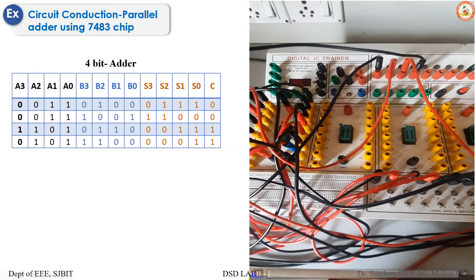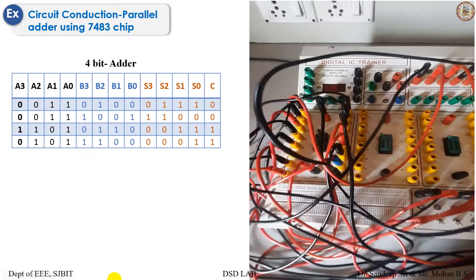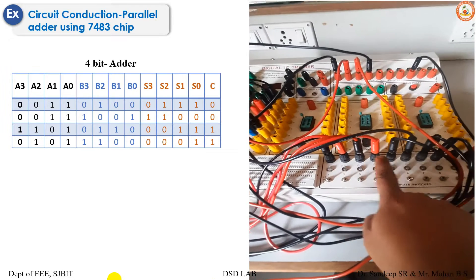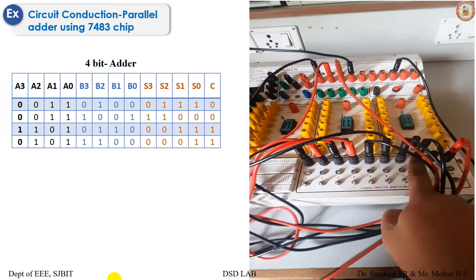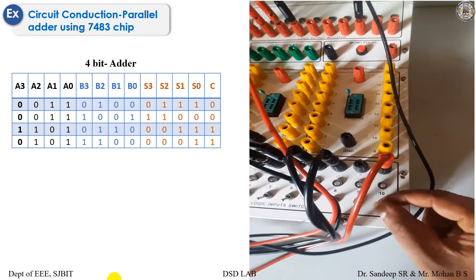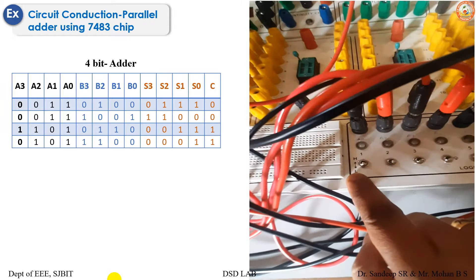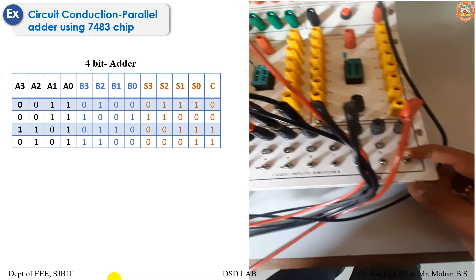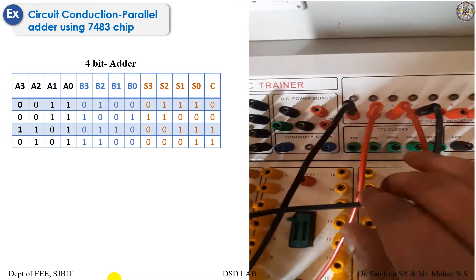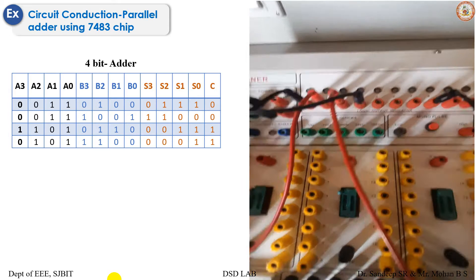Let us realize the parallel adder using IC 7483. The connections are done. These are the inputs: A3, A2, A1, A0, B3, B2, B1, B0, and this is C_in. The C_in has to be kept at low. These are our output ports to see the outputs S3, S2, S1, S0 followed by carry. Let us switch on the kit and realize the truth table.